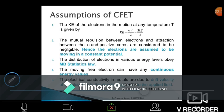Mutual repulsion between electrons and attraction between electron and positive cores are considered negligible. What is the idea of this? It implies that electrons are assumed to be moving in a constant potential—it does not feel any changes in the potential.